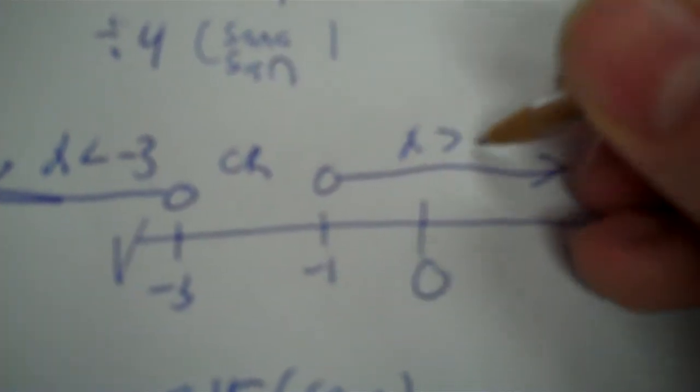So let's mark negative 3. If the nose points towards the x and it eats the number, the nose always points towards a smaller number. So if the nose is headed towards the x, x is less than. When it eats the x and nose to the number, then it's greater than. So x is less than negative 3 or x is greater than negative 1.